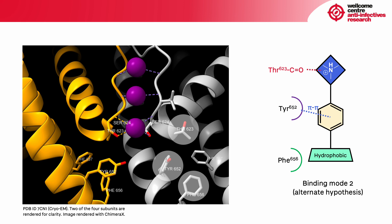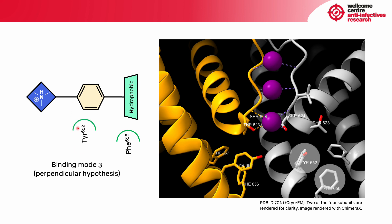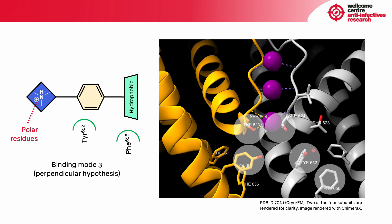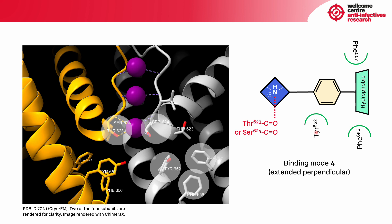There are also two perpendicular binding modes. In the first perpendicular mode, we again have a basic charged center, an aromatic ring, and a hydrophobic moiety. Phenylalanine interacts with the hydrophobic moiety, tyrosine makes hydrophobic interactions with the aromatic ring, and polar residues make polar interactions with the basic center. In the fourth binding mode, the positively charged center interacts with a carbonyl group from threonine or serine, tyrosine makes hydrophobic interactions with the aromatic ring, and phenylalanine residues make hydrophobic interactions with the hydrophobic moiety.